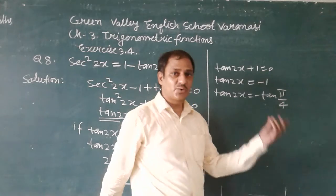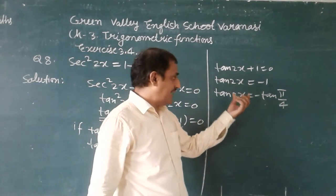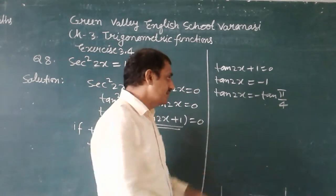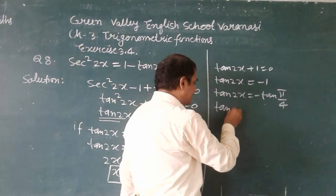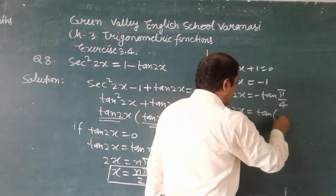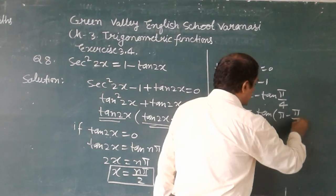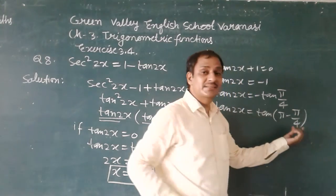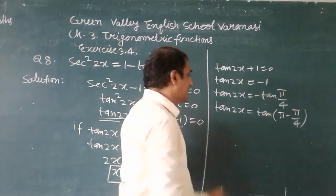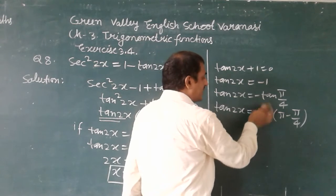As you know that in the second quadrant, the sign of tangent function is negative. It means you can write it like tan2x is equal to tan(π minus π/4). This value lies in second quadrant and these two values are equivalent.